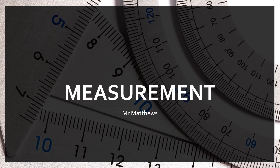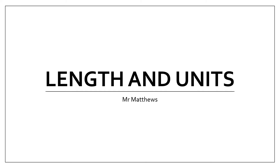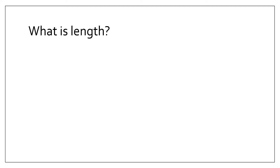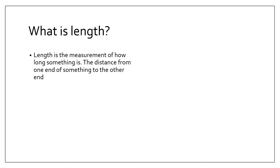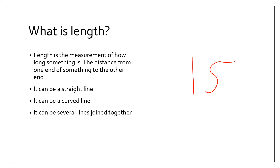In this section we're going to start learning about measurement, starting with length and unit conversion. So what is a length? Length is a measurement of how long something is, or the distance from one end of something to the other end, or from one side to the other side. It can be a straight line, a curvy line, or it could be several lines joined together.